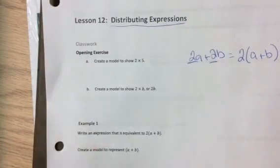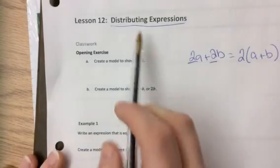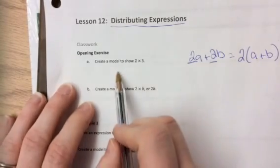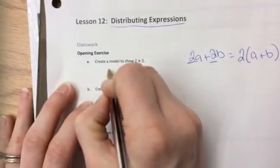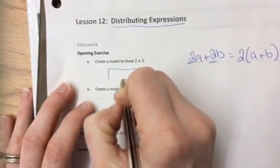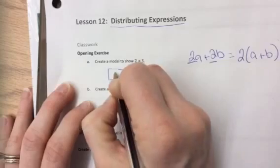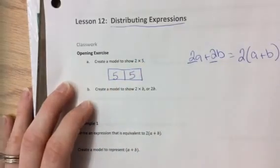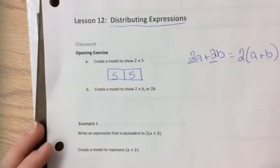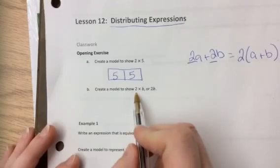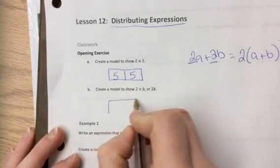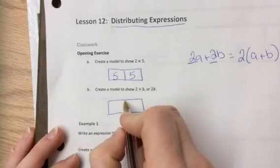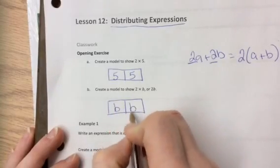First we need to review how to model this, because throughout the lesson you're going to be asked to model the distributive property. So first we're going to create a model to show 2 times 5. You guys remember doing a tape diagram? Two groups of 5. We could also create a model to show 2 times B, which is also known as 2B, except instead of having 2 groups of 5, we're going to show 2 groups of B.